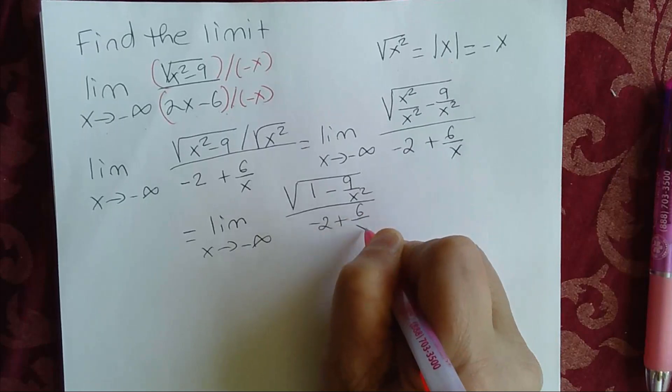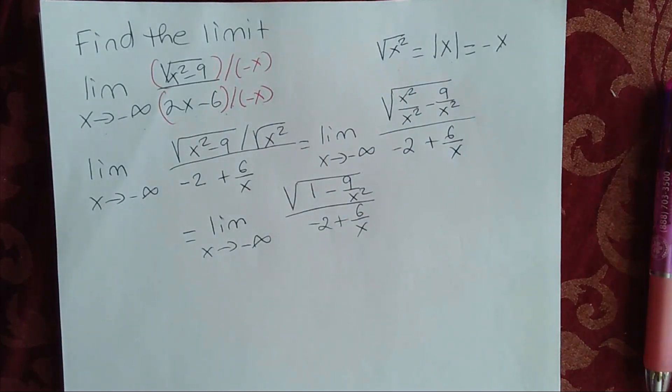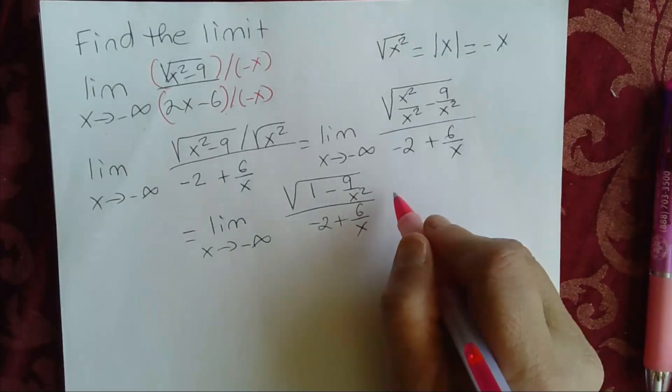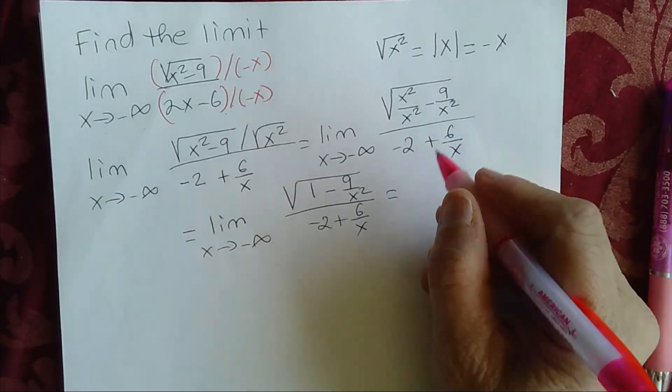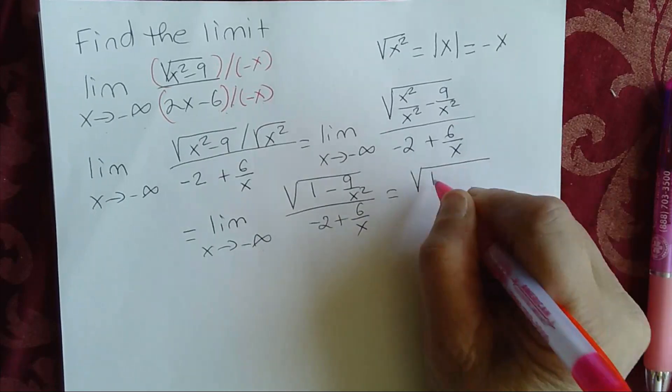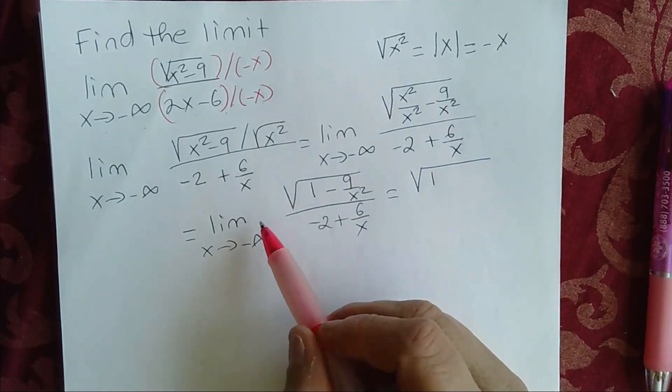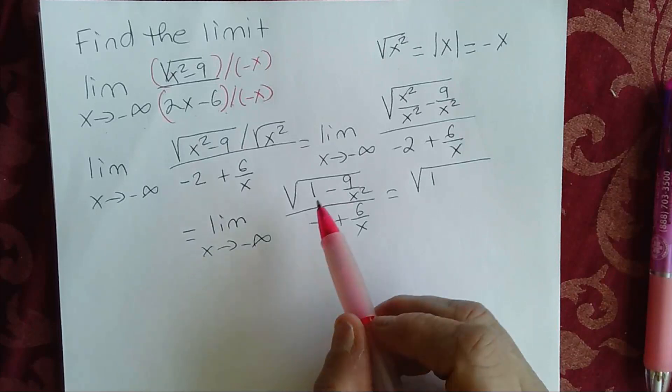Now we can apply the limit laws. The limit of 1 as x approaches negative infinity, remember that's a 1, the limit of a constant as x approaches anything is simply the constant.